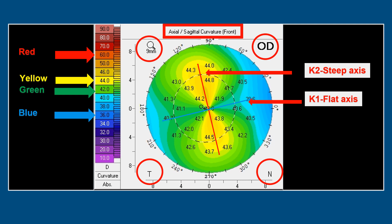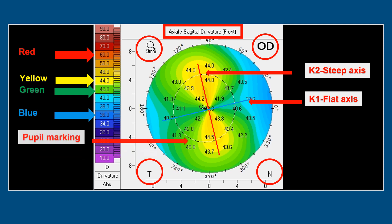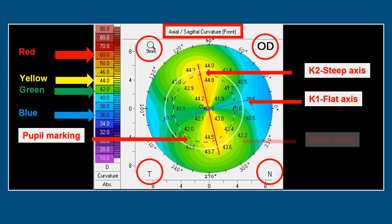K2 is the steep axis and K1 is the flat axis, shown on the map. There is also a circle indicating the pupil marking on the topography map. That covers the axial or sagittal map.